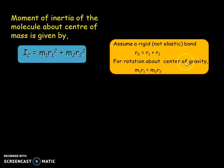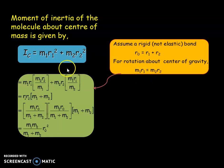For rotation about center of gravity, M1 R1 equal to M2 R2, from which R1 can be written as M2 R2 by M1 and R2 as M1 R1 by M2. By applying this in the equation, we will get this type of equation and rearranging it, we will get R1 R2 into M1 plus M2.